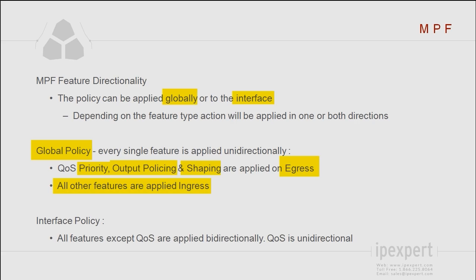As you can see, with the global policy, technically speaking, we are applying the features in only one direction, but since we are going to do it on all interfaces, it's like we are applying features bidirectionally. Versus on the interface — when we apply the policy to the interface — most features are going to be applied bidirectionally, with the exception of QoS features, which are always unidirectional. So input policing is going to be applied inbound, outbound QoS features are always going to be applied outbound, and all other features like inspections and connection settings are going to be applied bidirectionally, in both the ingress and egress direction.